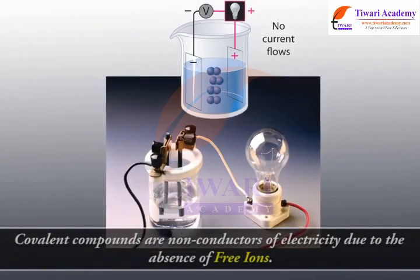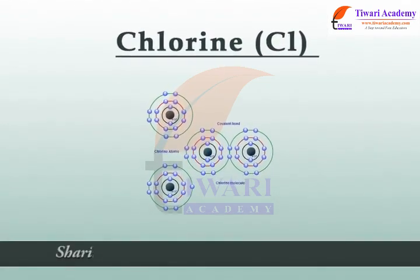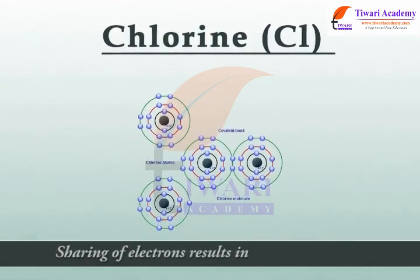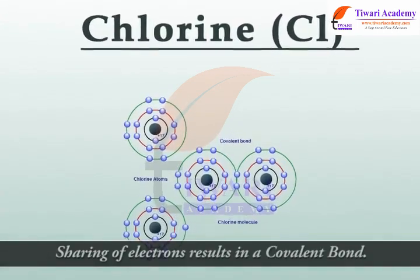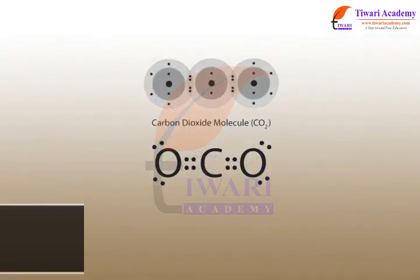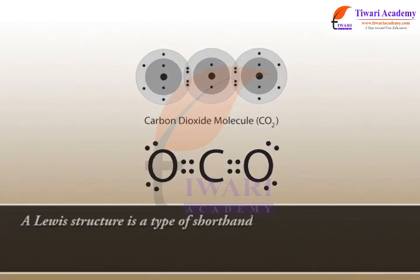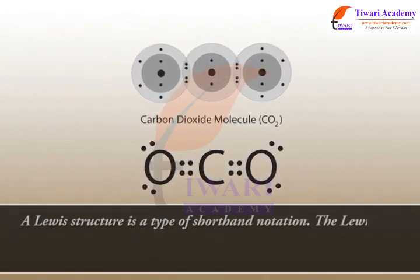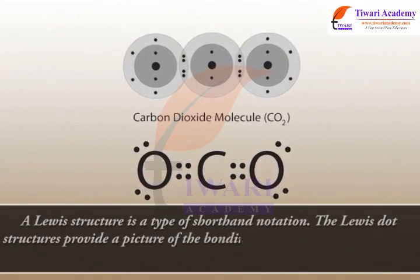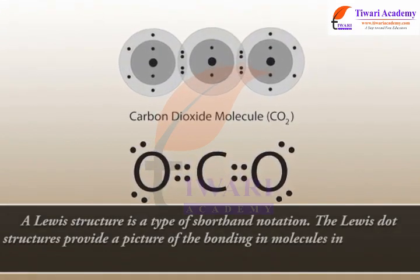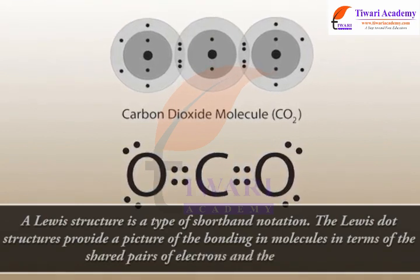Sharing of electrons results in a covalent bond. A Lewis structure is a type of shorthand notation. Lewis dot structures provide a picture of the bonding in molecules in terms of the shared pairs of electrons and the octet rule.